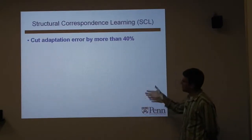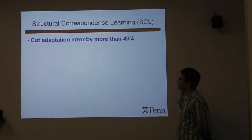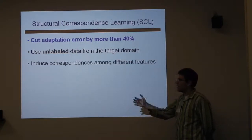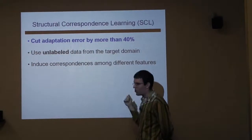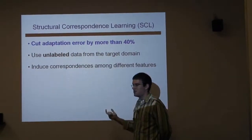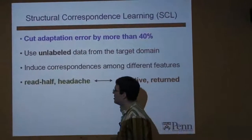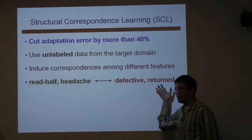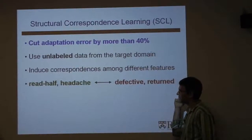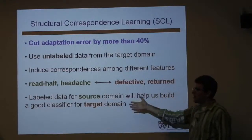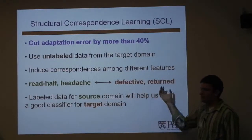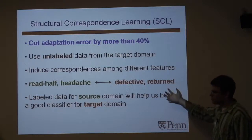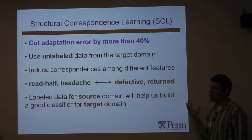Structural correspondence learning will cut this error by 40%. The basic idea is just to use unlabeled data from the target domain. We call it correspondence learning because we're going to induce correspondences among features from the different domains. For our sentiment example, the bigram 'read half' in books is sort of like the word 'defective' in kitchen appliances — they roughly mean the same thing. If we can find good correspondences, the labeled data for the source domain will automatically give us a good classifier for the target domain.